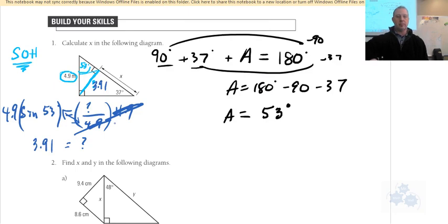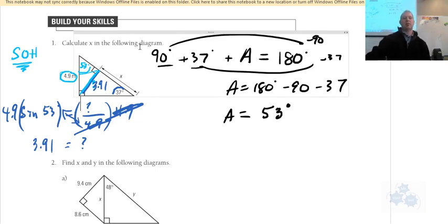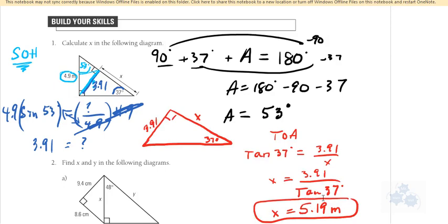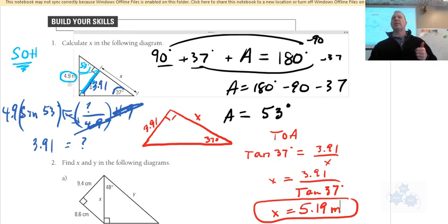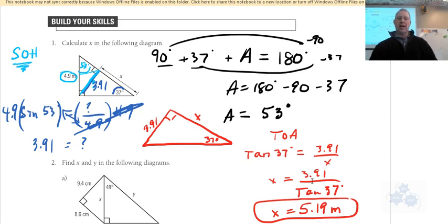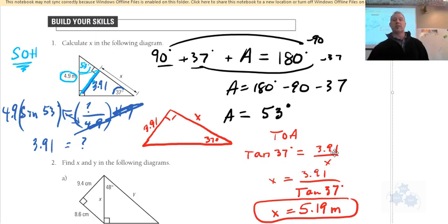So 3.91 is our intermediate value. Now we have two pieces of information for the second triangle and can solve for the third — X. Take a minute to finish that on your own. Please label your diagrams, draw triangles out if needed, and show all your steps so you don't multiply when you mean to divide. X should be 5.19.